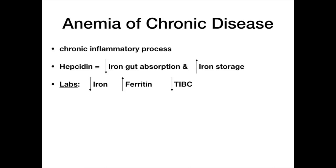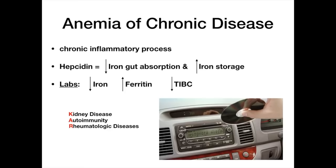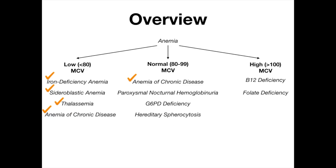Causes of anemia of chronic disease include infections, kidney disease, autoimmunity, and anything rheumatologic — like lupus, rheumatoid arthritis, or chronic kidney disease. Mnemonic: anemia of chronic disease → CD (like a music CD) → you listen to CDs in the KAR → KAR stands for Kidney disease, Autoimmunity, Rheumatologic diseases. The body is trying to hide iron regardless of whether it's an actual infection or chronic inflammation. That's anemia of chronic disease — normal or low MCV.